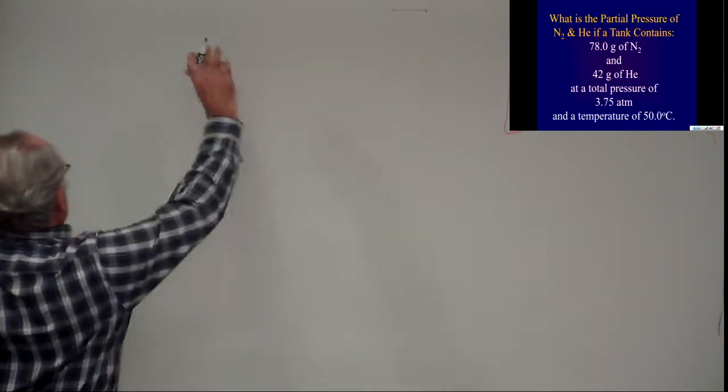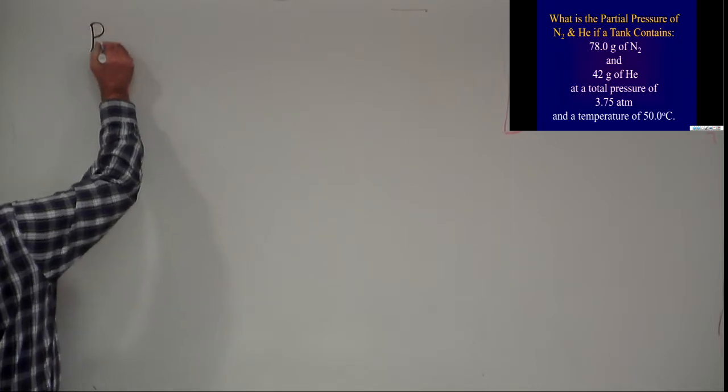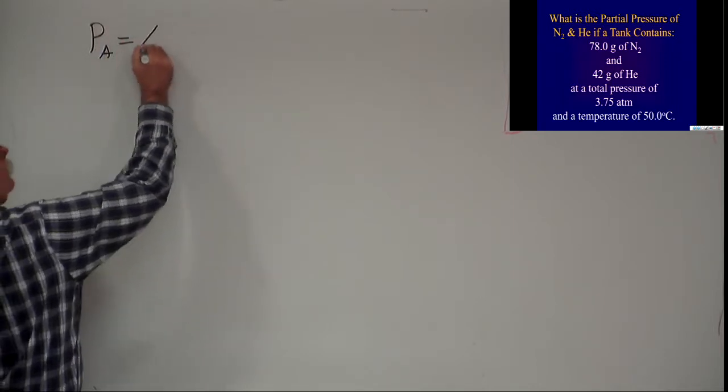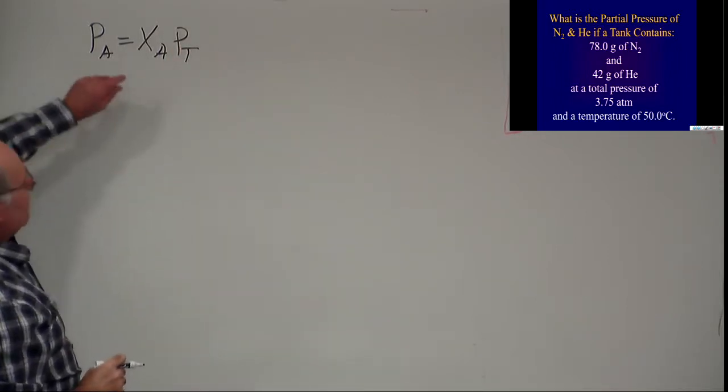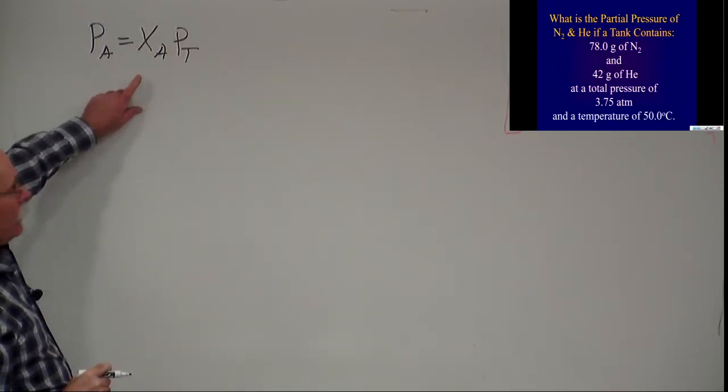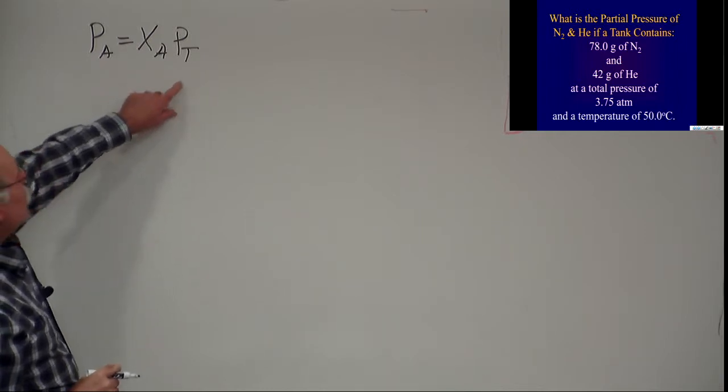First we need to remember that the partial pressure of any gas A is equal to the mole fraction of that gas times the total pressure. What we're given is the mass of the components, not the moles, and the total pressure.